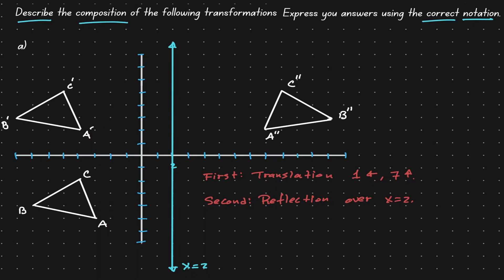So we have identified the two transformations that were performed. The last thing that we need to do is represent this using the correct notation. First, we had a translation of one unit to the left and seven units up. Then we followed it with a reflection over the line x equals 2. So we can represent this transformation composition using the notation in blue.